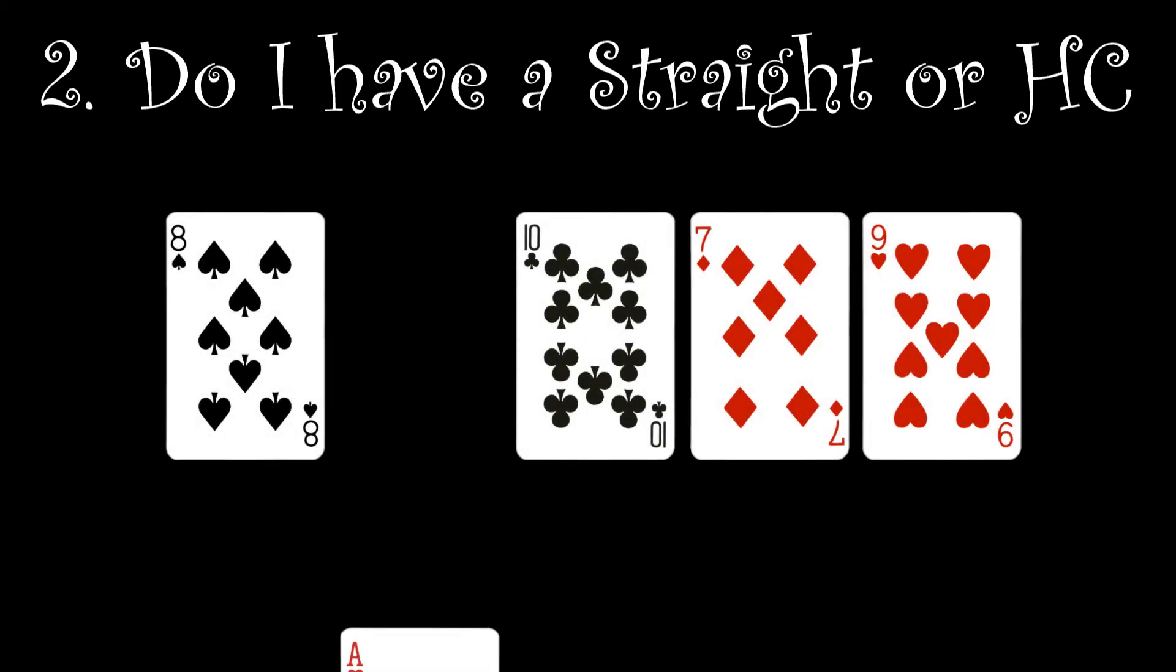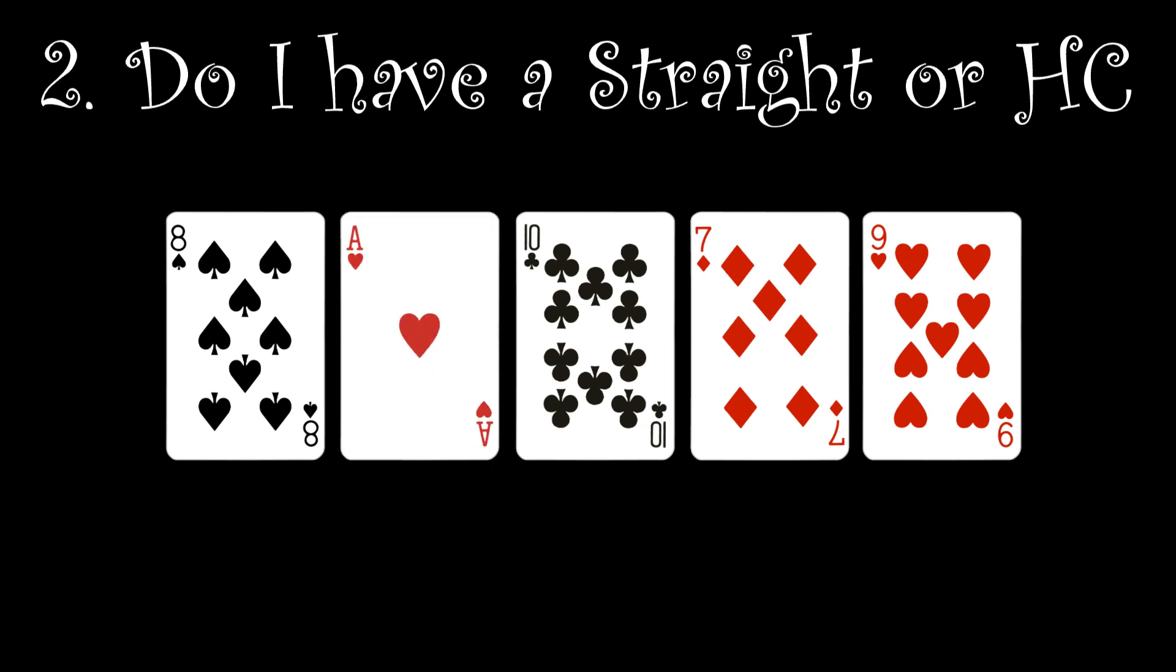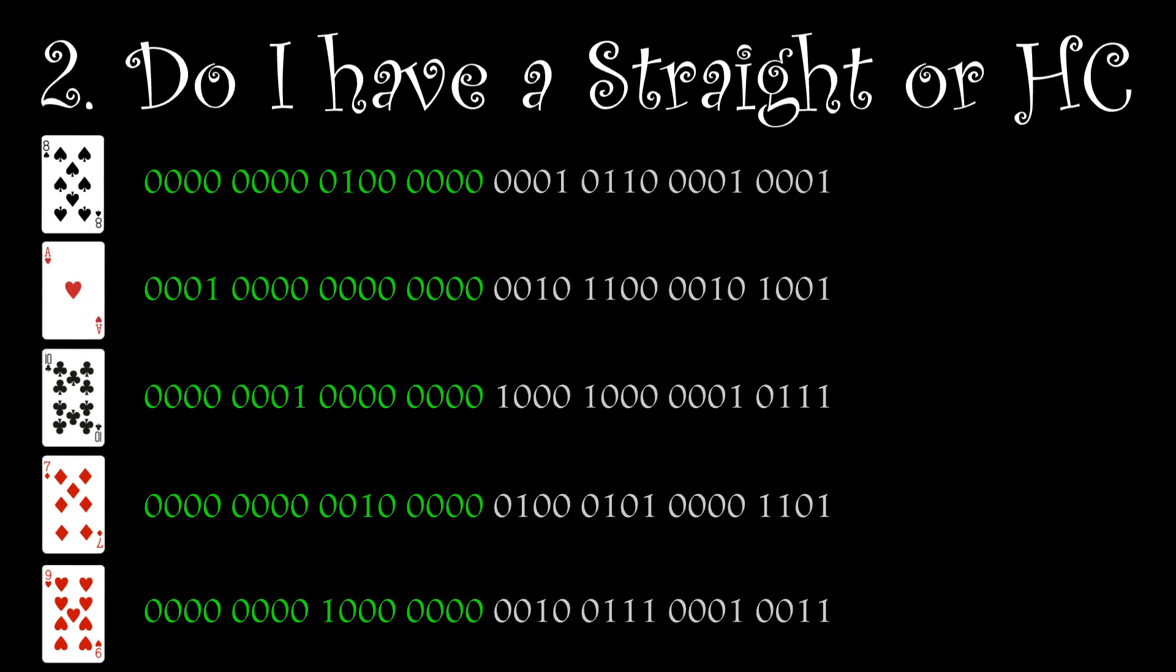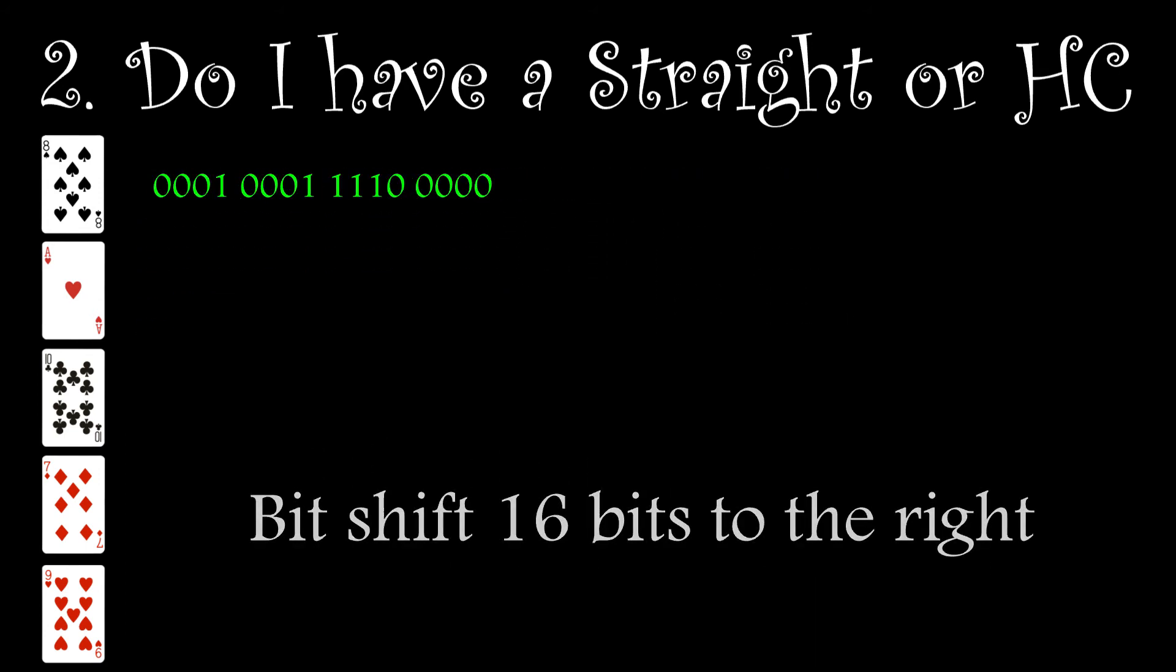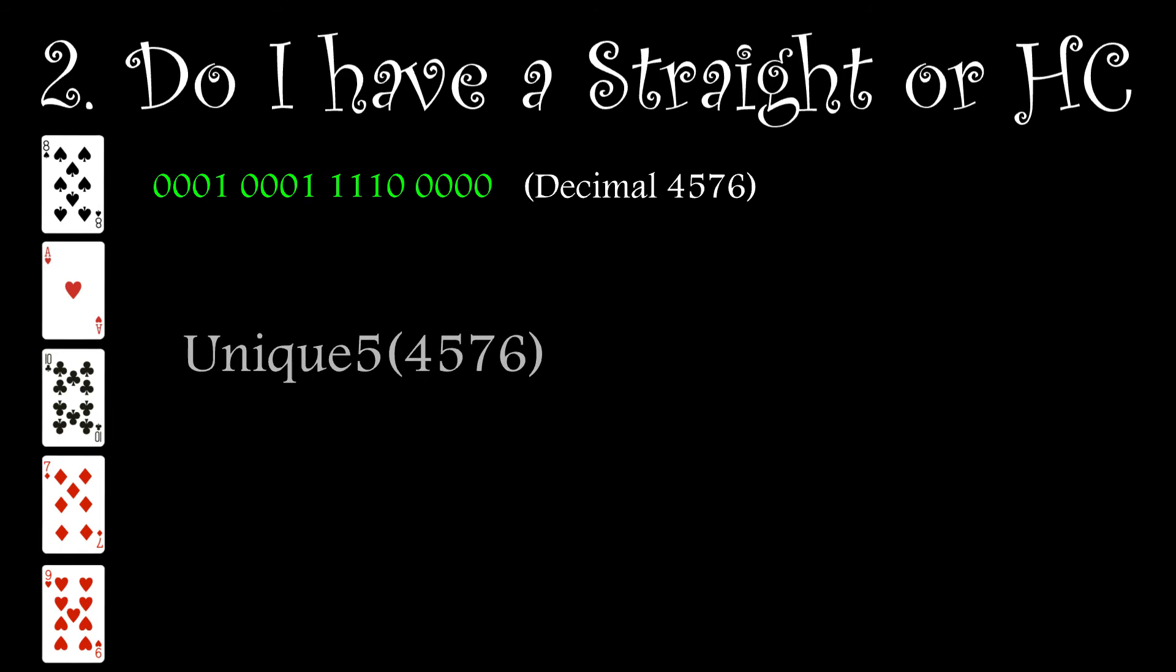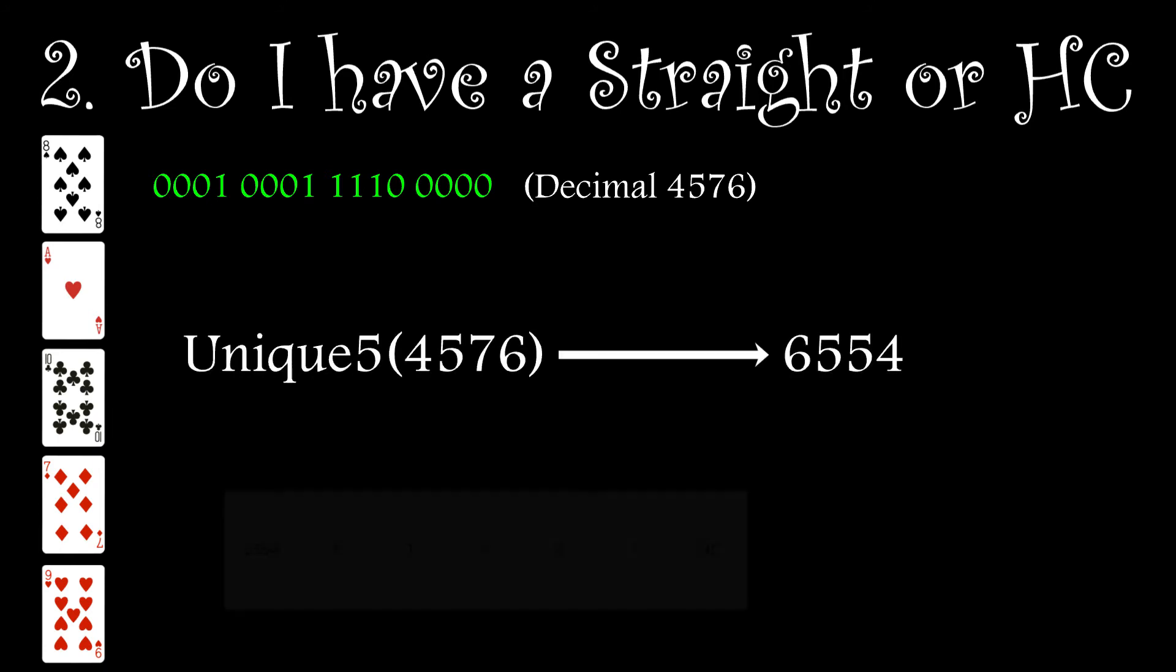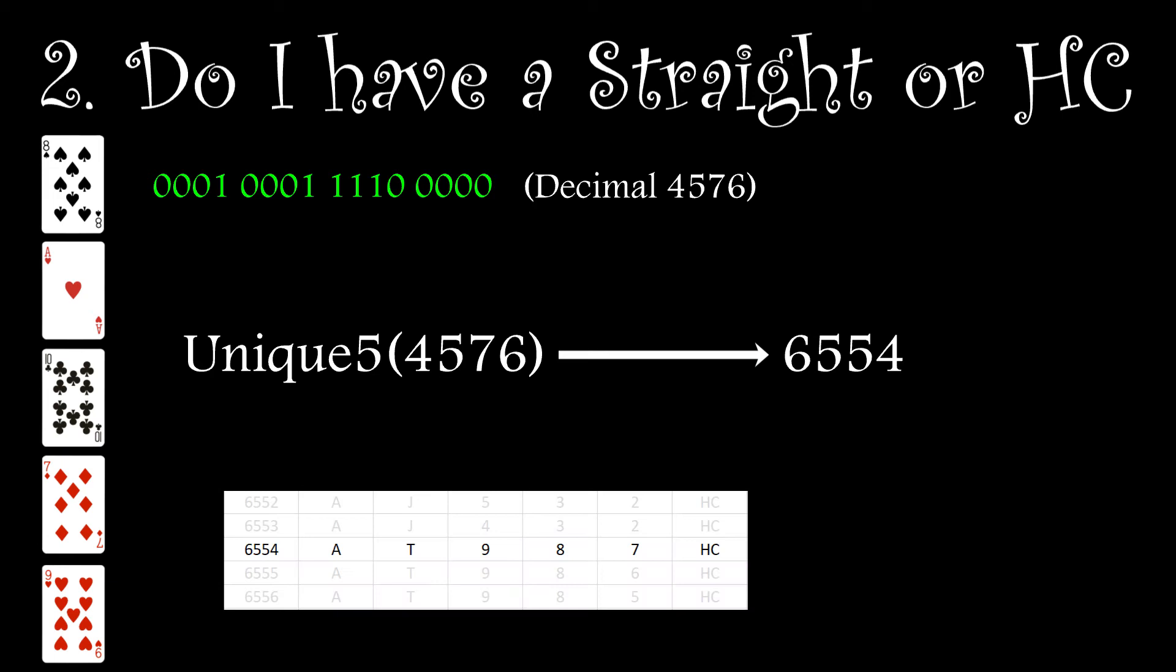Taking another example, I swap the six with an ace, turning the hand from a straight to a high card hand. Extracting the lookup ref from this hand gives us an index of 4576 and ranks the hand at a poorly 6554. And again, checking the table, I can see it's correct.